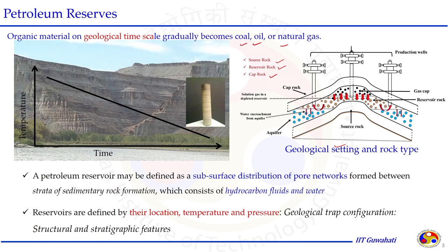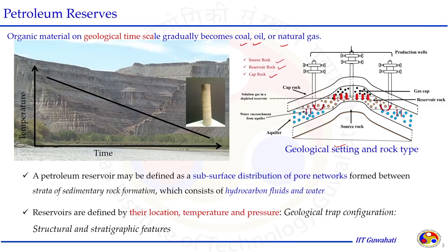The reservoirs are defined by their location, temperature and pressure. A particular type of reservoir may or may not contain hydrocarbons, and even if it does, how much it contains depends on the location of the reservoir and the temperature-pressure conditions. In geological terminology, this is called the geological trap configuration. Structure and stratigraphic features are the important parameters that determine the nature of the reservoir.